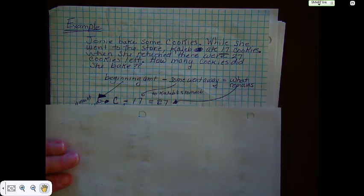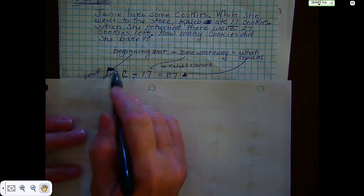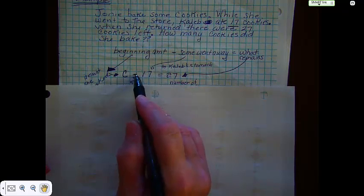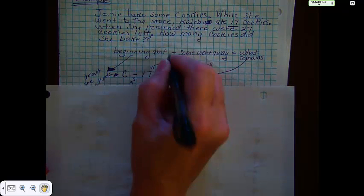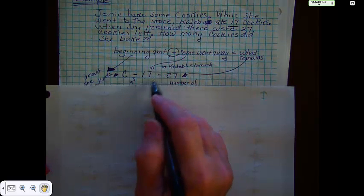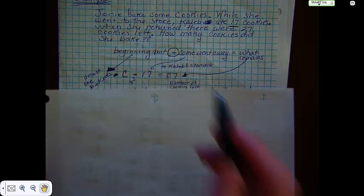So you could write it like this. You have a beginning amount, which we don't know. That's the amount that she baked. We have a subtraction take away. Some went away. 17 of them, in fact. And we know 17 went away. There were 27 left over. That's what remains.